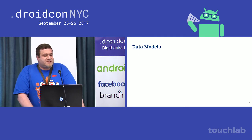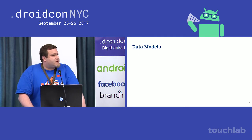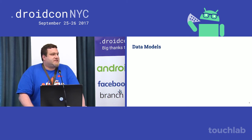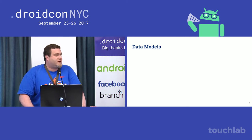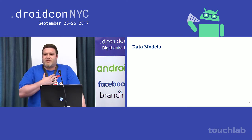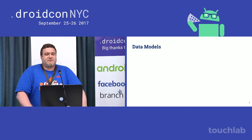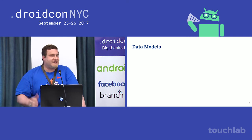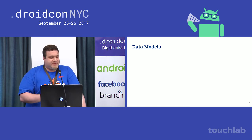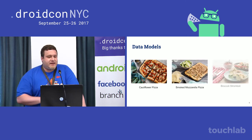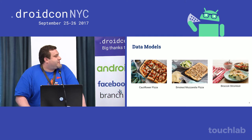So you've got Realm available in your app — what's next? In order to actually do anything with Realm, you have to define some objects and their relationships. Because I work at Blue Apron, we're going to talk about food. Let's imagine that we want to build an app that can list out some recipes. I love pizza, so we're going to have a few recipes: a cauliflower pizza, a smoked mozzarella pizza, and a broccoli stromboli, which is basically a pizza that you fold over.